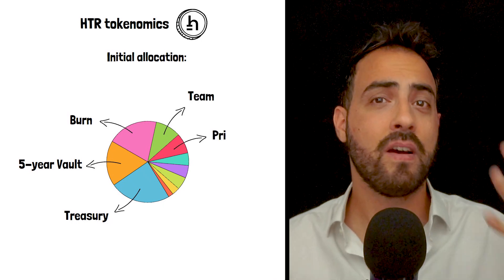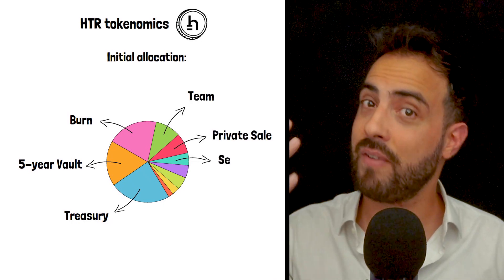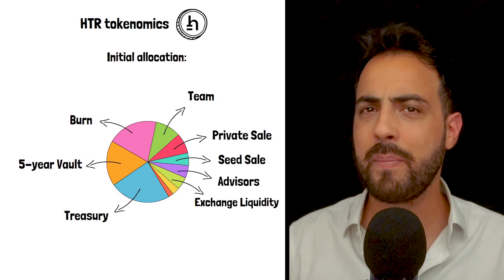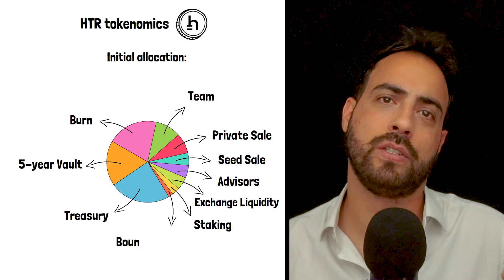10% to the team, 8% to the private sale, 5% to the seed sale, 5% was given to advisors, another 5% to exchange liquidity, 3% to staking, and 2% to bounty and ecosystem.